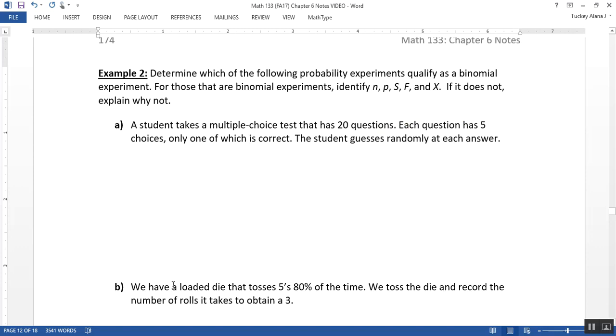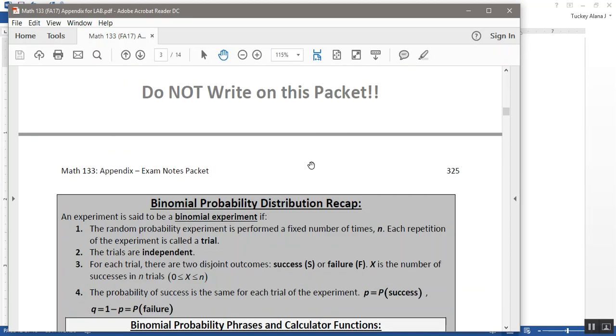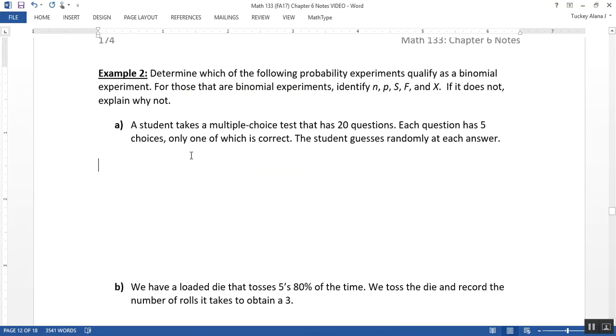So if we think of the properties that make something binomial, and let me pull them up on the exam notes packet just for ease of finding them, they're there. So we need to have a fixed number of trials, the trials need to be independent, there need to be two possible outcomes but only two, and the probability of success has to be the same consistently through every trial. All right, so if we look at this experiment, we do in fact have a fixed number of trials. So the fixed number of trials would be equal to N, which is equal to 20, because the student is randomly guessing on 20 questions. So there's our N, right there.